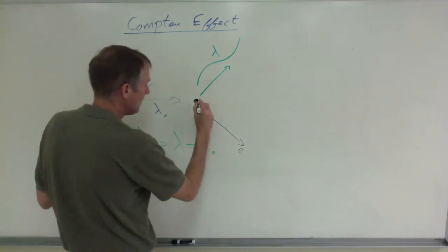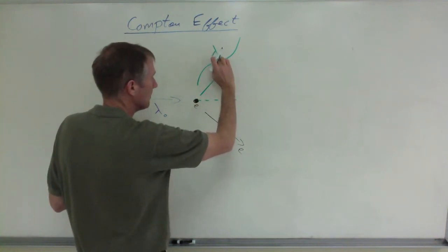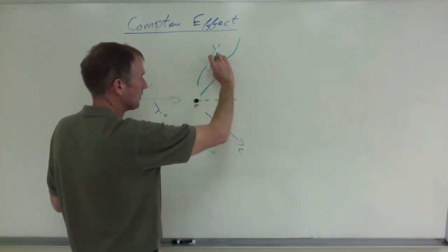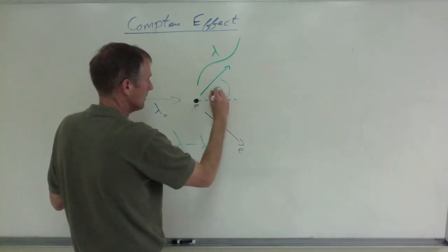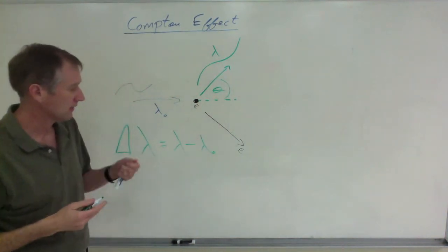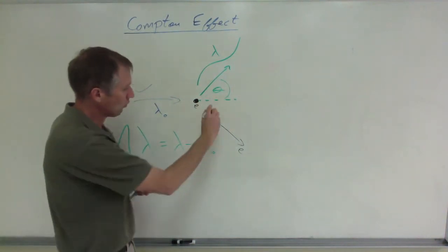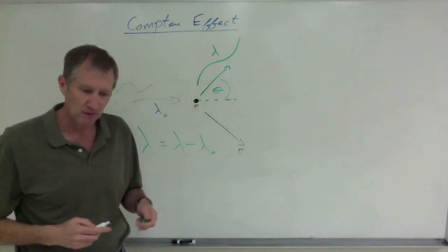So this angle, by the way, between the photon after the collision and this horizontal line, he uses the equation theta. Sorry, the symbol theta. The recoiling angle for the electron is going to be different.